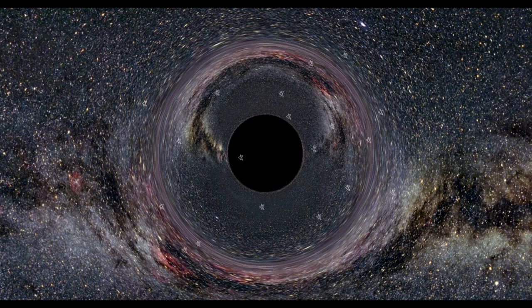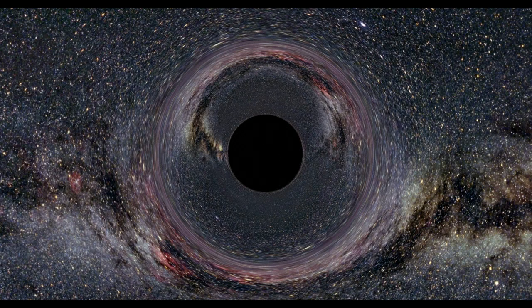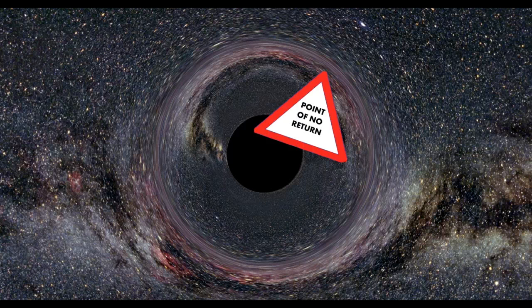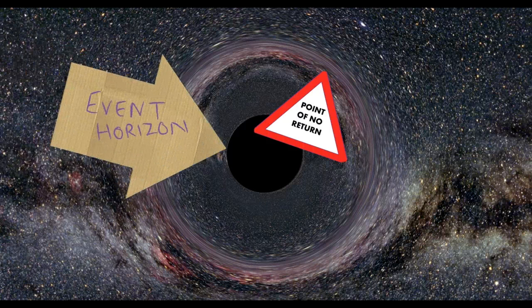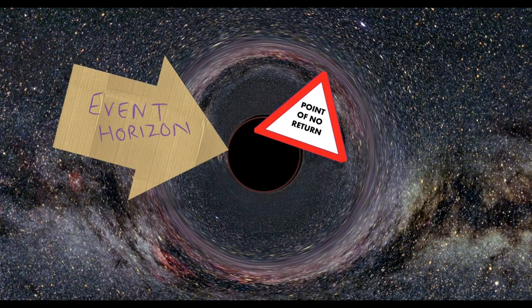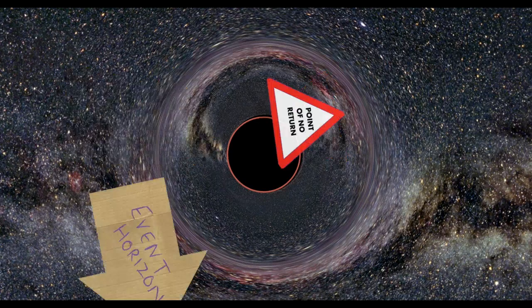The matter which is falling in has no way of escaping once it passes the point of no return. This point is called the event horizon. It is a spherical boundary hiding the inside of the black hole.